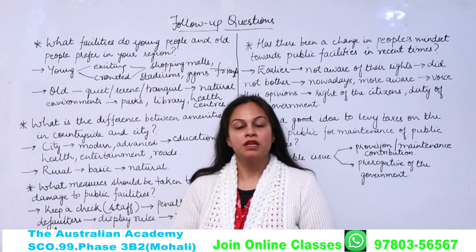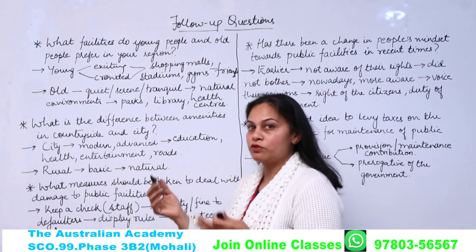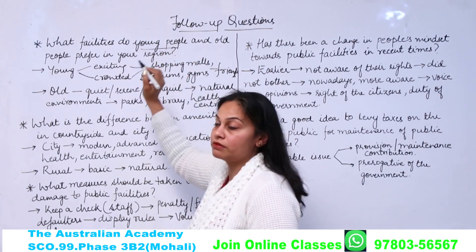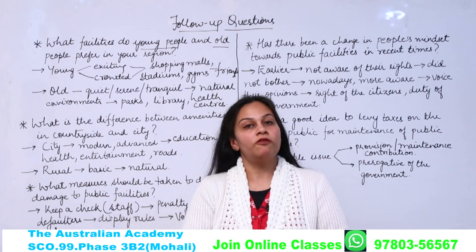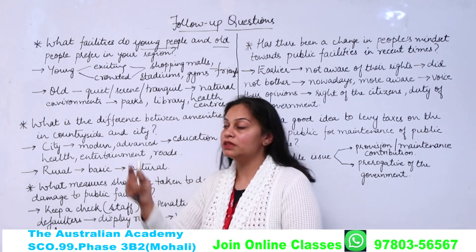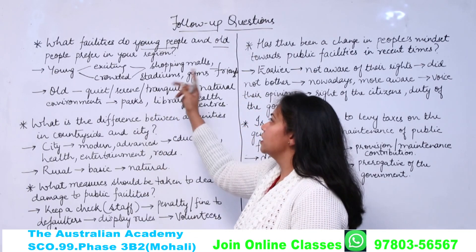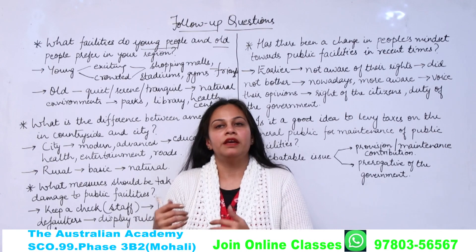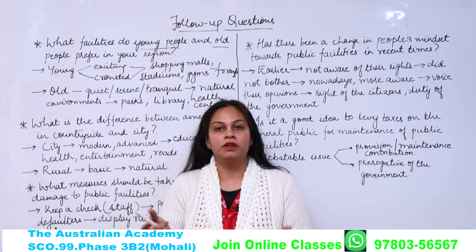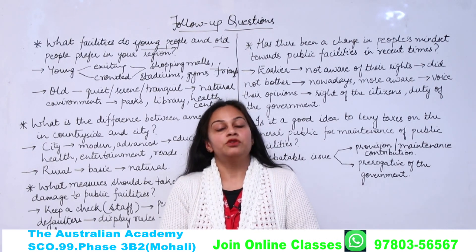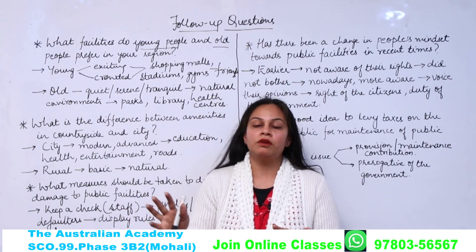Once you finish the cue card, the examiner will ask follow-up questions. The first is: what facilities do young people and old people prefer in your region? You need to make a comparison. Usually younger people prefer something exciting and are okay with crowded places like shopping malls, stadiums, and gyms — facilities very much associated with their lifestyle. They might also ask for high-quality gyms or state-of-the-art educational facilities.